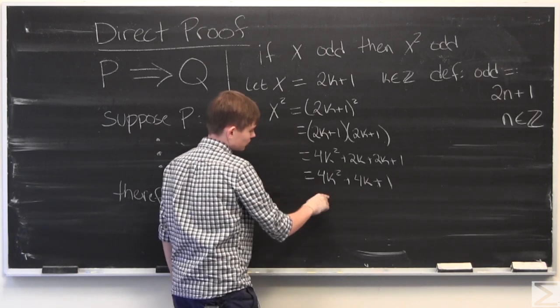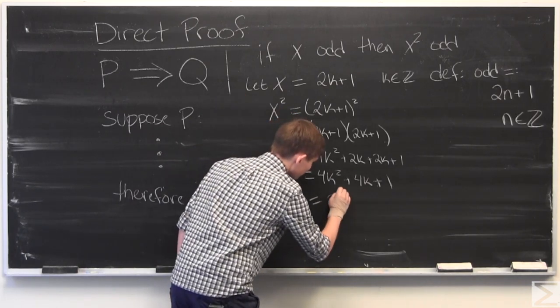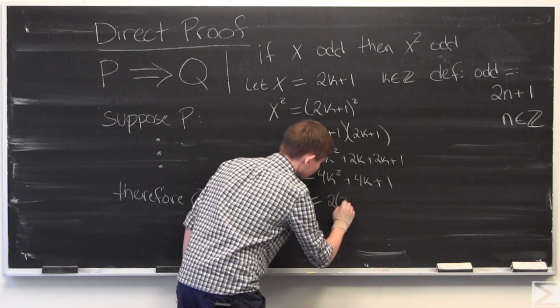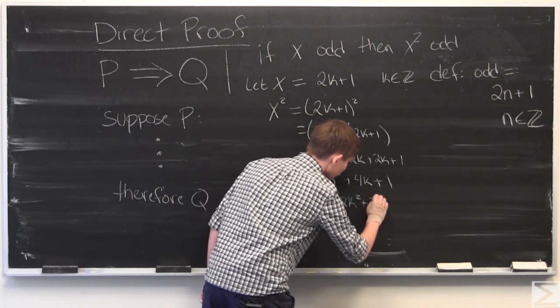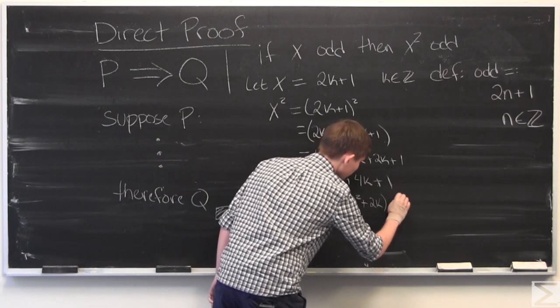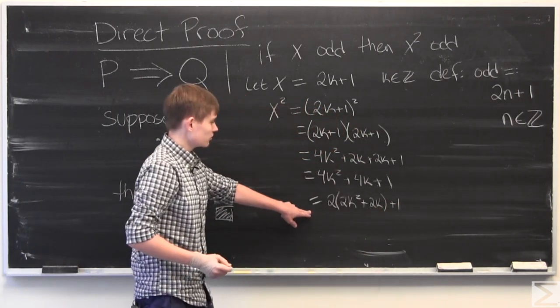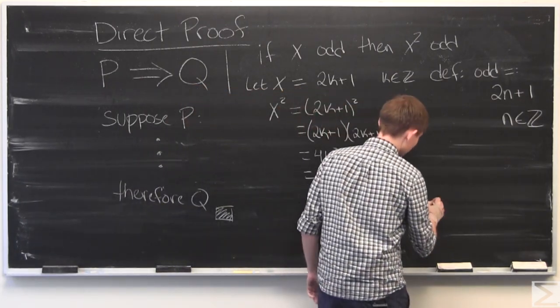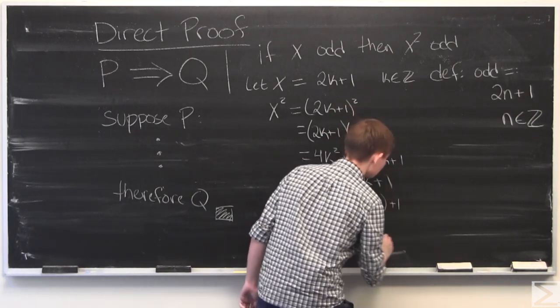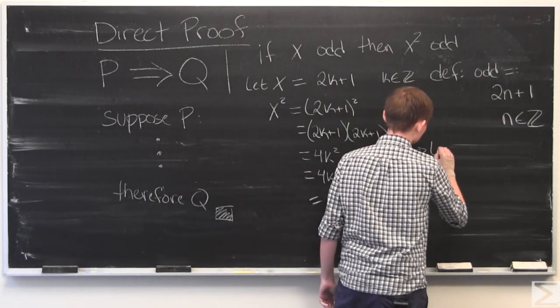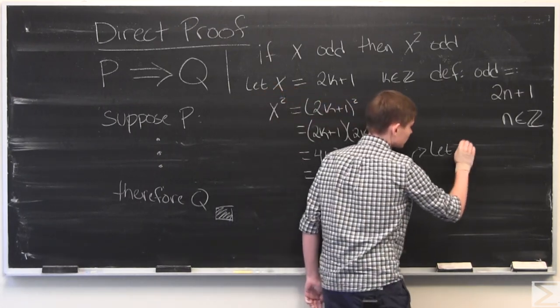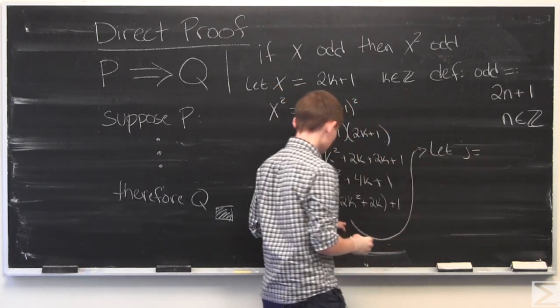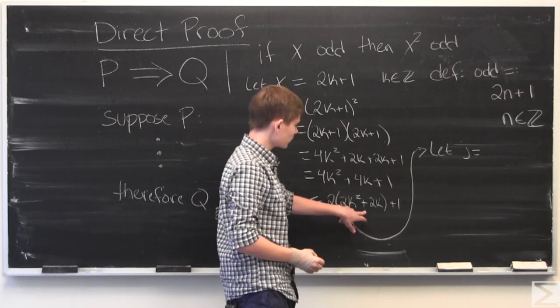And what we'll do is we'll factor out a 2. So let's say let J equal to 2k squared plus 2k.